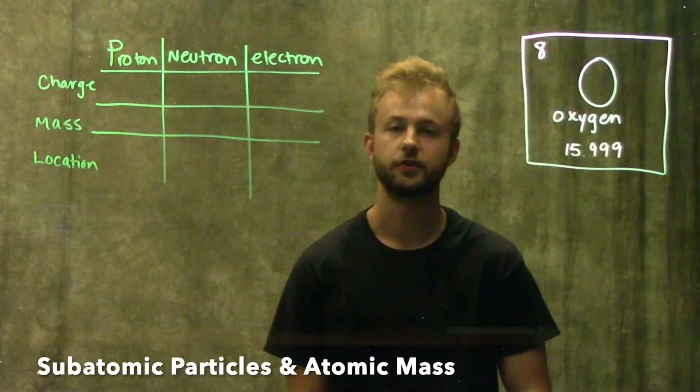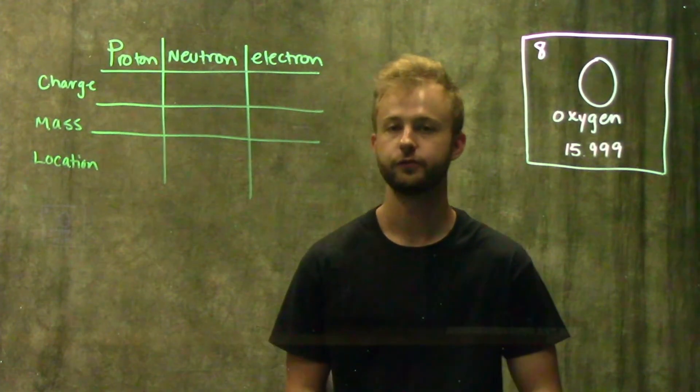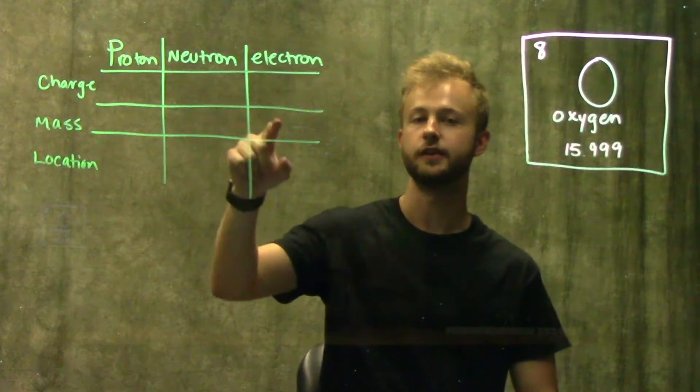This video is going to be about the subatomic particles and atomic mass. So the three subatomic particles that you need to know for freshman biology are the proton, the neutron, and the electron.